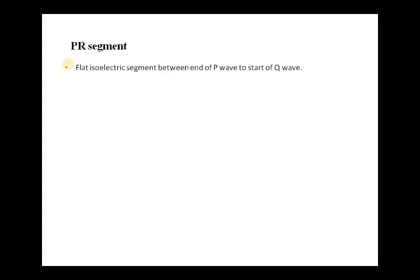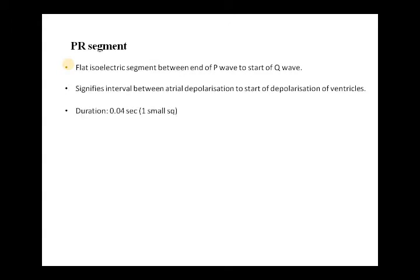Before moving to the intervals, we need to understand the segments of the ECG. The first segment is the PR segment — it is simply a baseline, an isoelectric line from the end of the P wave to the start of the Q wave (or R wave if Q is absent). No cardiac activity is occurring during this flat isoelectric segment. It signifies the interval between atrial depolarization and the start of ventricular depolarization. Its duration is just one small square, that is 0.04 seconds.